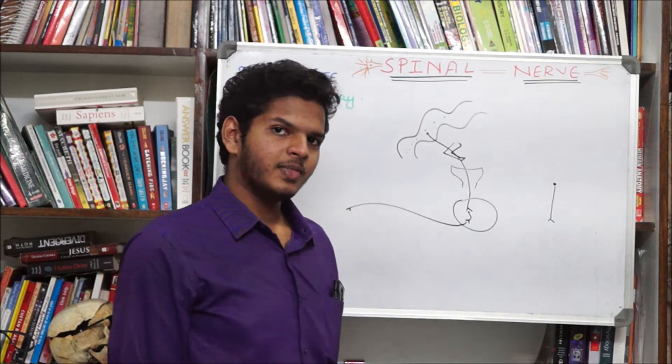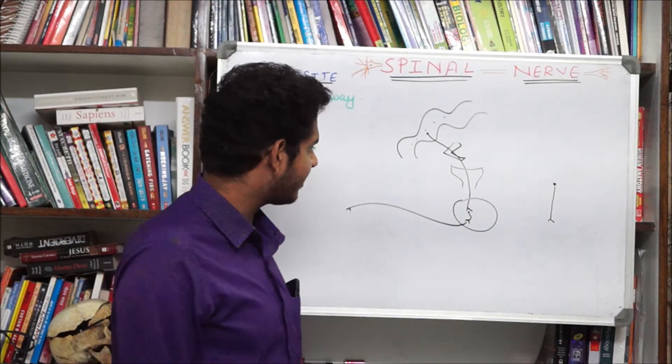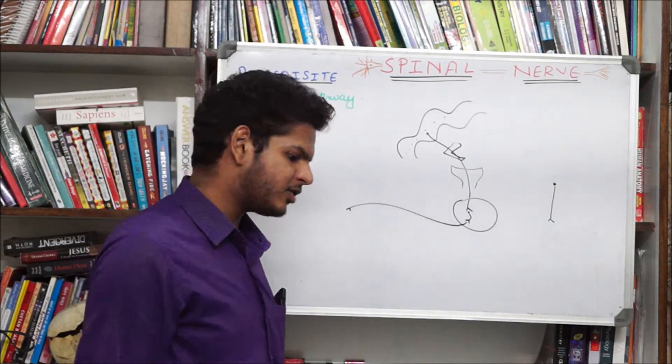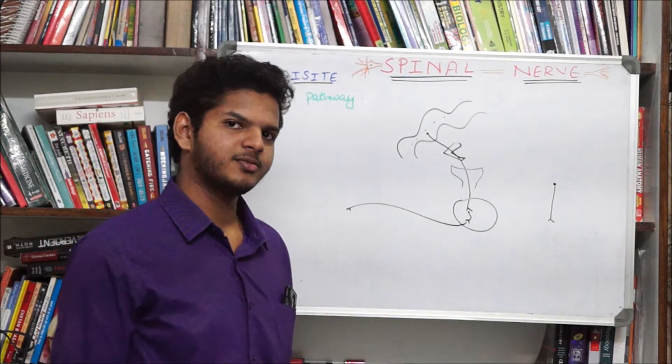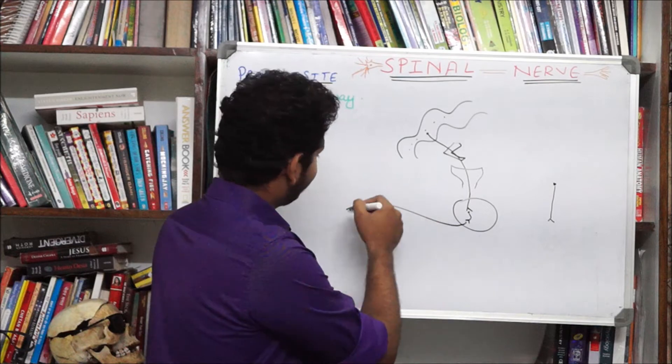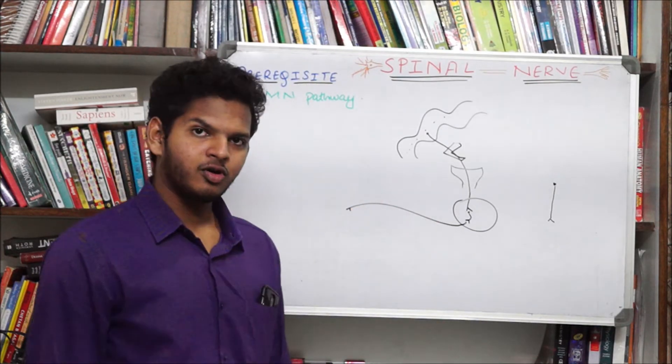The crus cerebri of the midbrain, the base of the pons and the pyramids of the medulla constitute the spinal tract and finally they are going to end up in the spinal cord as lateral corticospinal tract and the anterior corticospinal tract which will synapse with the motor neurons which will finally innervate different groups of muscles. So that was upper motor neuron pathway.